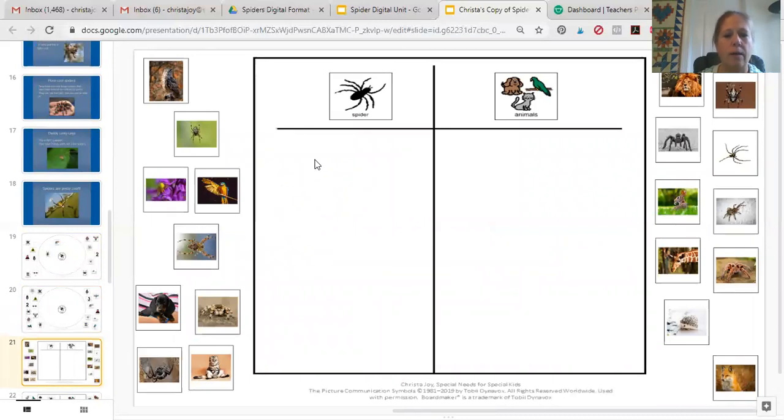This first one sorts spiders versus animals and these are photographs. The nice thing is the way I made this is that this background template doesn't move. The only thing that moves are going to be these pieces, and it doesn't unfortunately give you immediate auditory feedback whether your students are correct or not.